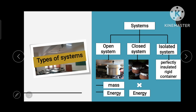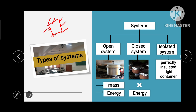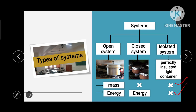For the isolated system, it does not allow mass transfer or energy transfer. The perfect example is a perfectly insulated rigid container. Insulation means it does not allow heat transfer through it. If the container is insulated outside, heat transfer won't occur, and since the container is closed, mass transfer also does not occur between the system and surrounding. So a perfectly insulated rigid container comes under an isolated system.